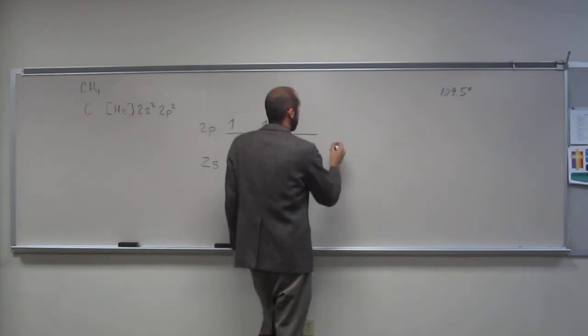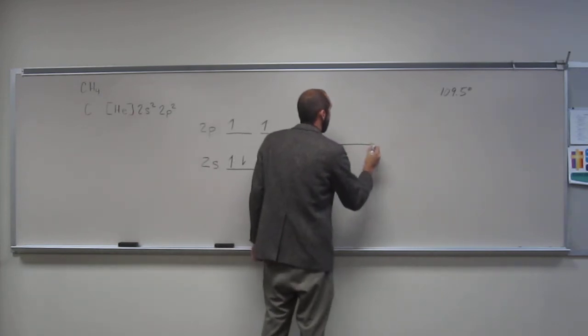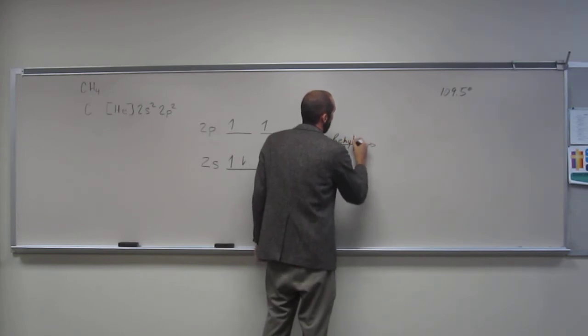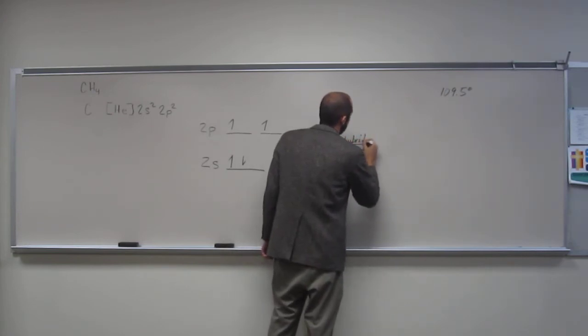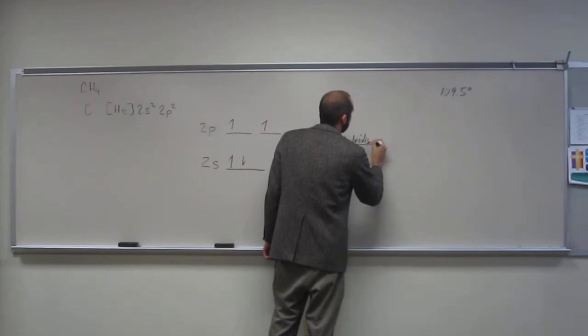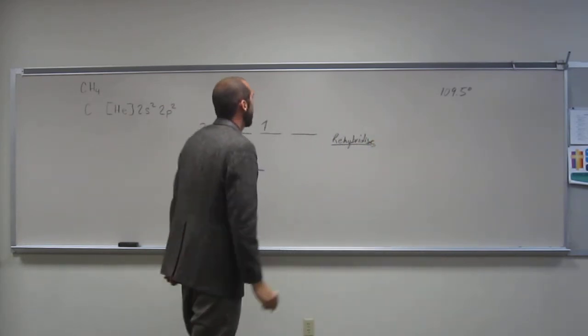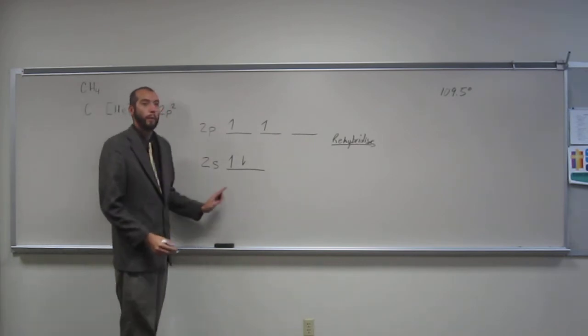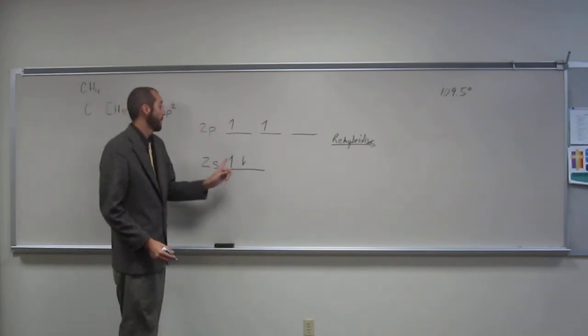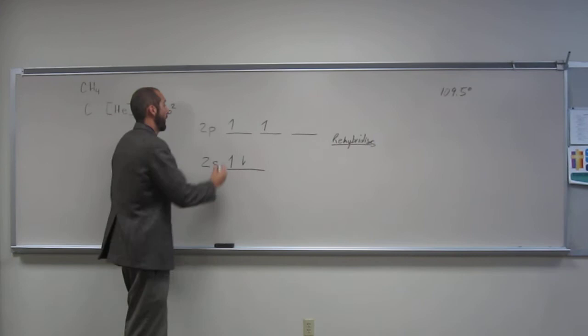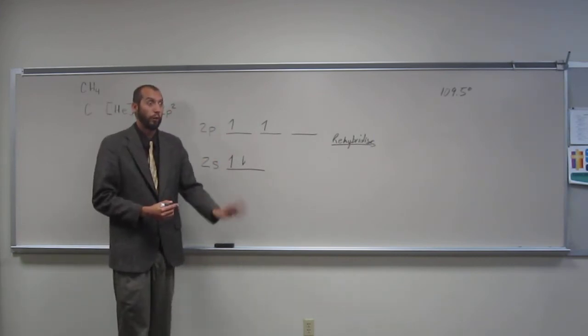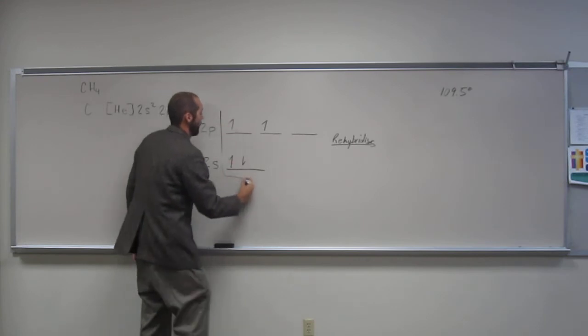So what does happen? You can say rehybridize or hybridize or mix or whatever you like. So what do we mix? We want to make four bonds, and we've got four electrons. So we're going to have to mix how many orbitals? Four. So we mix all four of these.